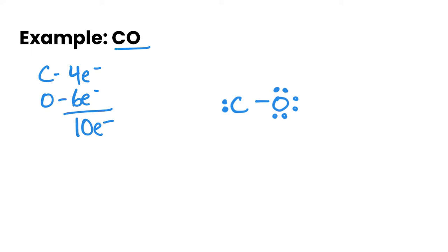Now, this is not satisfying the octet rule for both. We are satisfying it for oxygen, but not carbon because we've only got four electrons. So we do need to share and create actually a triple bond here to satisfy that octet rule. So this is what our final Lewis diagram is going to look like for carbon monoxide.